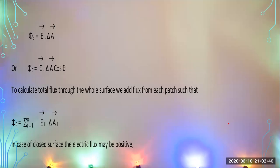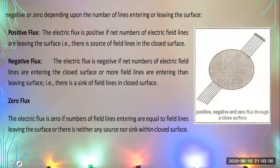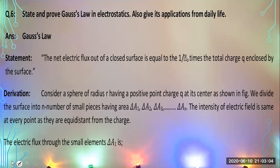Welcome back. During this class we are going to start a new topic: applications of electrostatics. Last time we discussed how to calculate the total flux through a closed surface. There is an important law linked with electrostatics called Gauss's law. This law is applied to calculate electric flux through a closed surface. We will discuss its statement, derivation, and limitations — it is applicable only in the case of a closed surface.